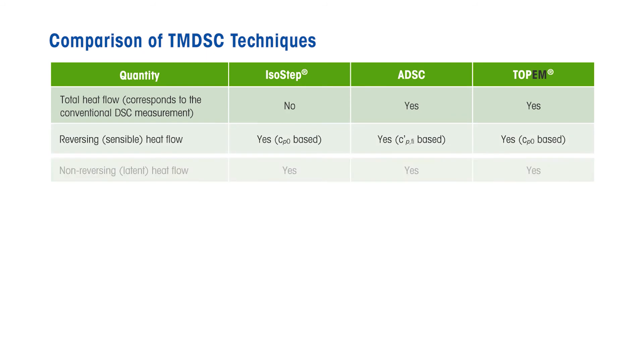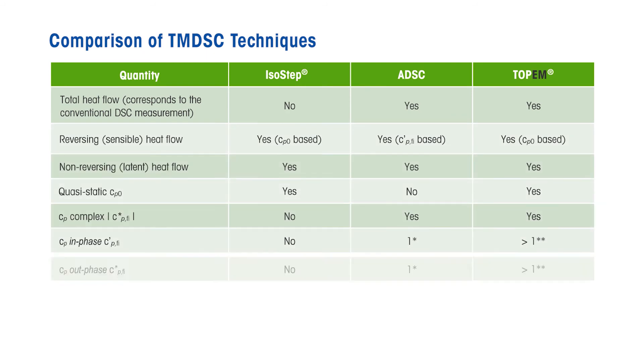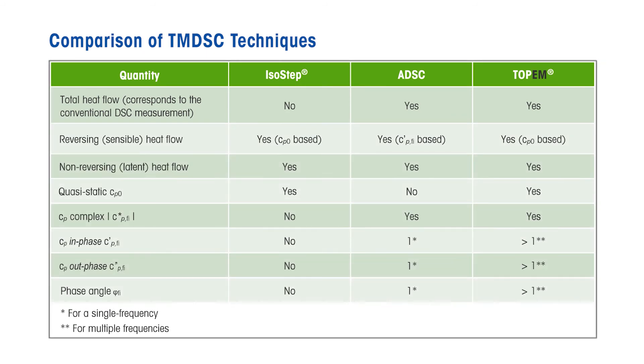ADSC provides the following information: total heat flow; reversing, sensible heat flow; non-reversing, latent heat flow; complex heat capacity and its in-phase and out-phase components; and a very sensitive phase angle curve for the selected frequency.